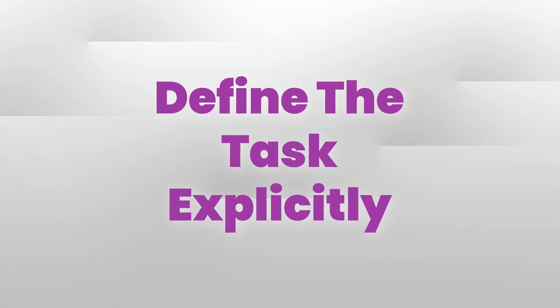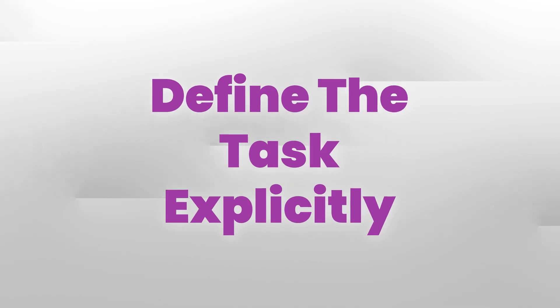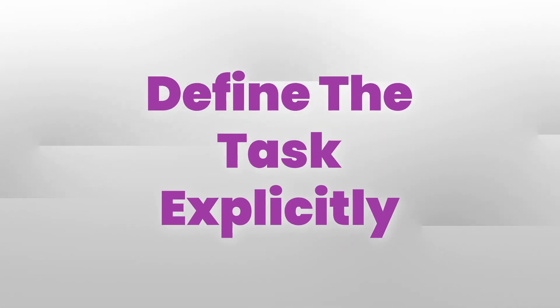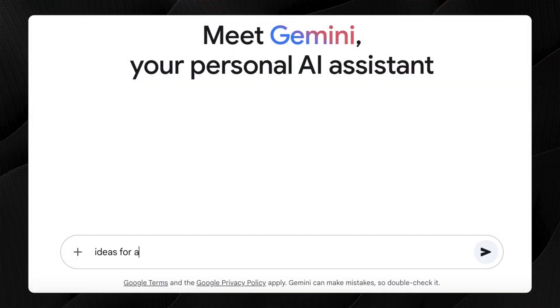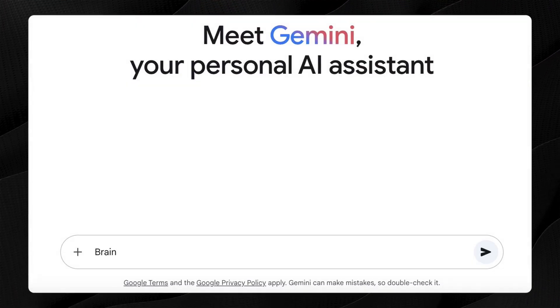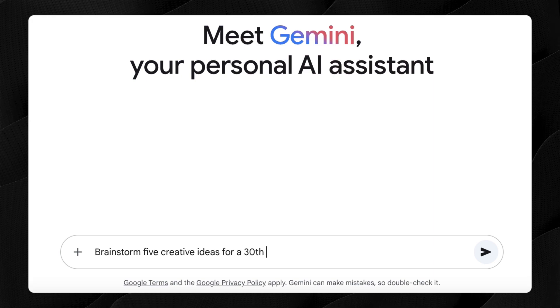Second: define the task exactly. Be explicit about what you want the LLM to do. Instead of saying "give me birthday party ideas," you could say "brainstorm five creative theme ideas for a 30th birthday party."